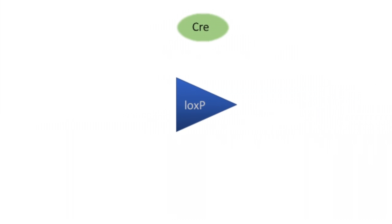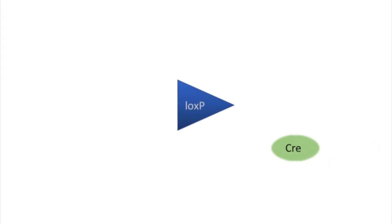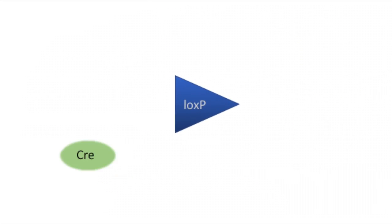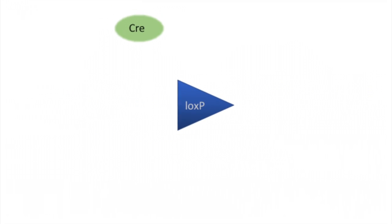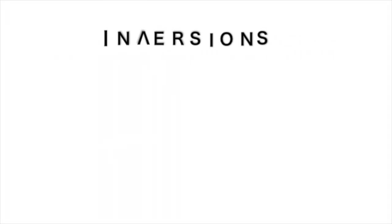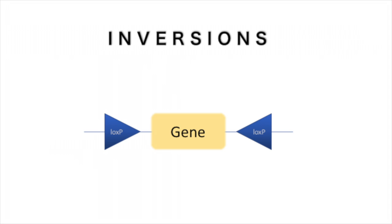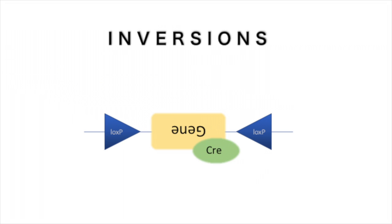Because LoxP sites and Cre recombinase are both required for the mechanism to take place, conditional selection is allowed based on whether the Cre recombinase gene is expressed in a cell. Inversions take place in the genome when the two LoxP sites are facing in opposite directions; Cre recombinase recognises the orientation of the LoxP sites and the gene is inverted.